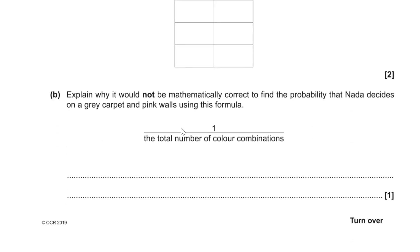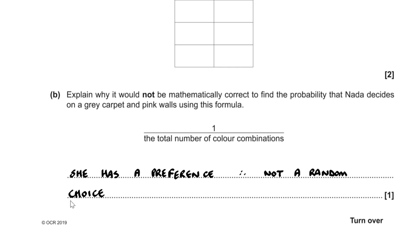For part B, we explain why it would not be mathematically correct to use 1 over the total number of combinations to find the probability of grey carpet and pink walls. The reason is that Nada's choice is not a random choice — the outcomes are not equally likely.